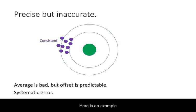Here is an example of measurements that are very consistent and hence are precise, but they miss the target. Hence, these measurements are inaccurate. This is usually an indication of systematic sources of error.